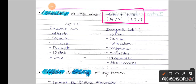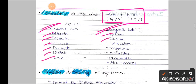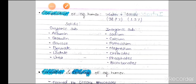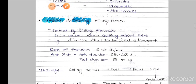The solids in aqueous humor are divided into organic and inorganic substances. Organic substances include albumin, globulin, glucose, pyruvate, lactate, and urea. Inorganic substances include sodium, calcium, potassium, magnesium, chlorides, phosphates, and bicarbonates. Overall, the aqueous humor has a composition mostly similar to blood plasma.